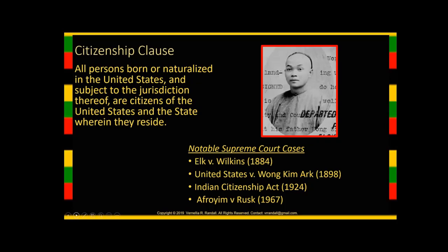This was an essential clause in order to overturn the 1857 Supreme Court decision, Dred Scott, which basically said that the only persons who are citizens of the United States are white persons. And I really want to emphasize that, because when I teach race, white people will say, 'Why are you always talking about race? Why do you always talk about white people?' And I say, 'Because you all did — you put it in law that only white people could be citizens of the United States.'